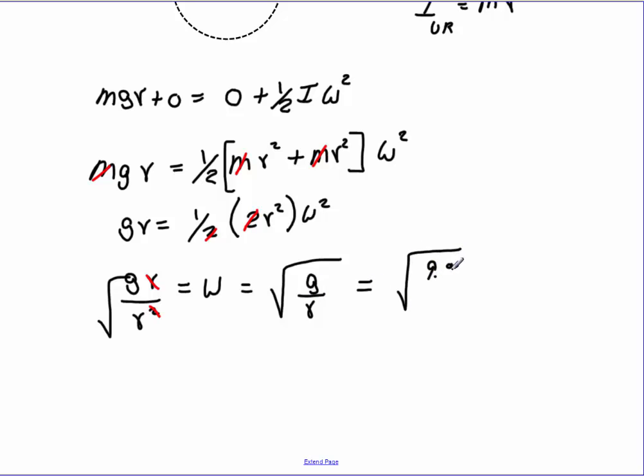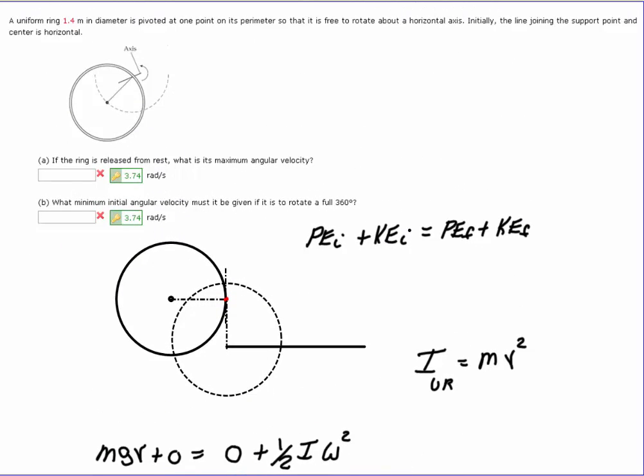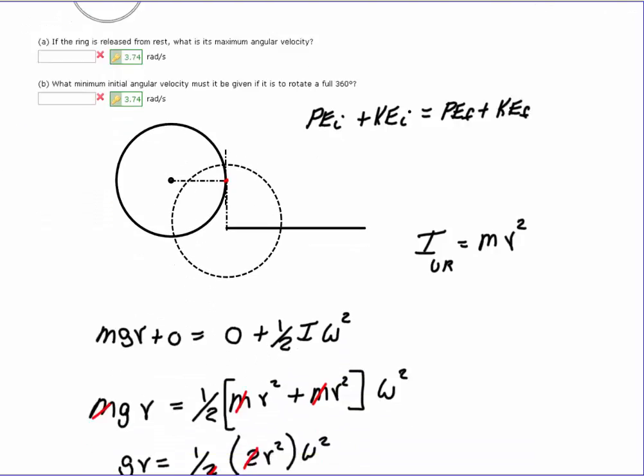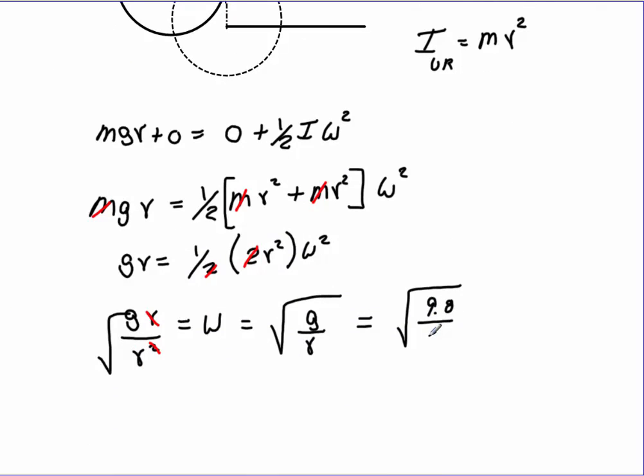We know that's 9.8. We'll go back and look and see what the radius was. The radius was 1.4 diameter, so we will put 0.7 in for that. And that will be our value. Run that through the calculator. We have 9.8 divided by 0.7, square root, which gives me a value of 3.742 radians per second. That's how you're going to do part A.